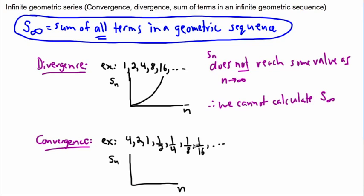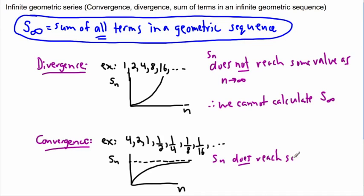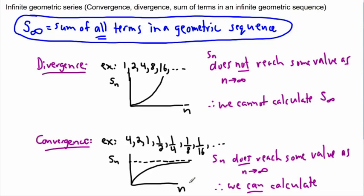At first, the sum changes a lot, but as we keep going, notice we're adding smaller and smaller values. If we made n really large, we'd be adding practically nothing. The graph has an asymptote — it gets infinitely close to some value. So here, Sn does reach some value as n approaches infinity. Therefore, we can calculate S of infinity.